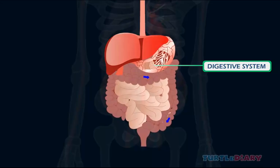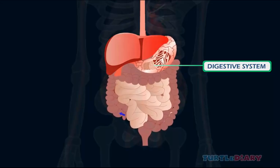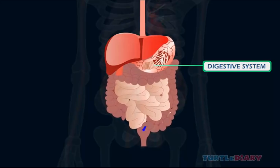Digestive system. Our digestive organs break down food to provide our body energy and raw materials.